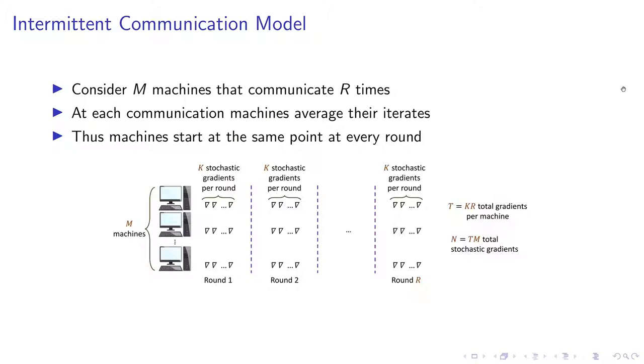I'll be considering a simple communication model here, which is relevant for each of these settings and can be modified to use in each of these settings. Consider M machines. These machines are allowed to communicate R times. And between the time they communicate, they have K stochastic gradients each and they can use any optimization algorithm to make updates on the model locally present on each machine.